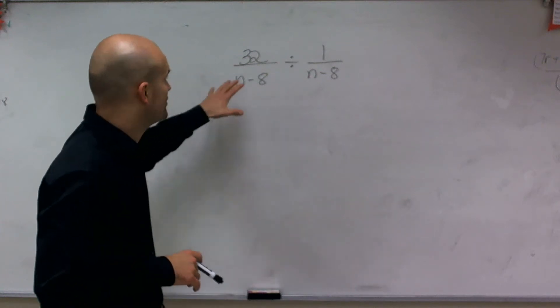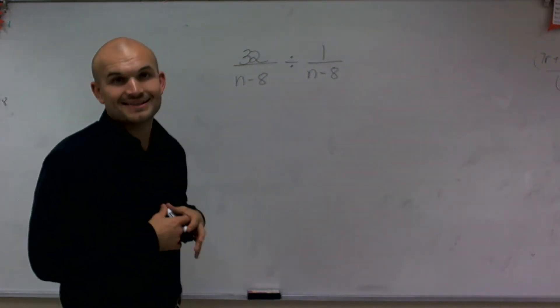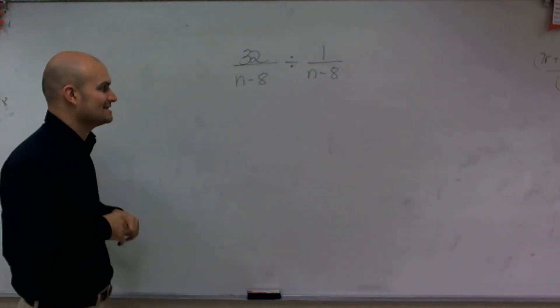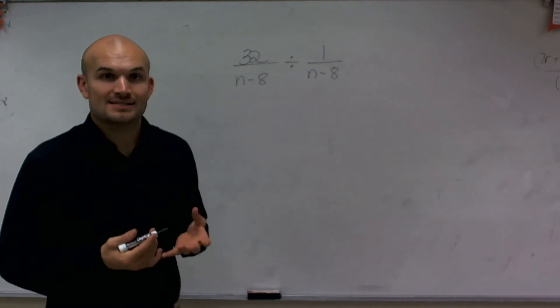Welcome. What I want to do is show you how to divide this lovely rational expression. So what I have is 35 divided by n minus 8, divided by 1 divided by n minus 8.